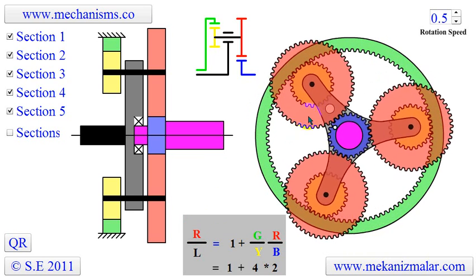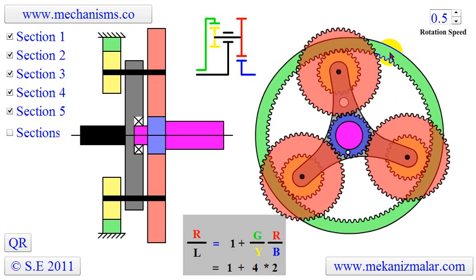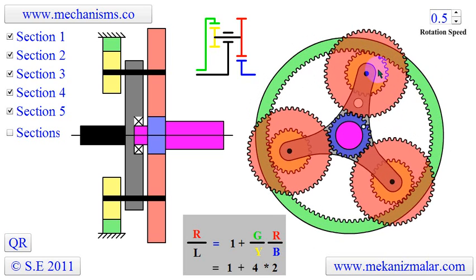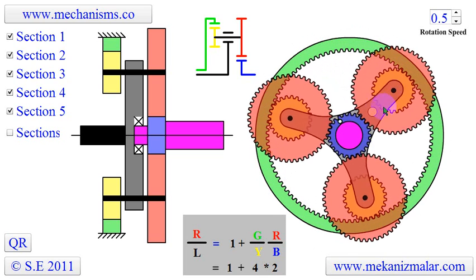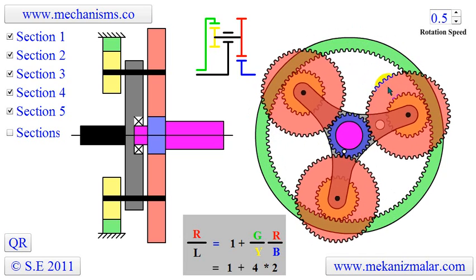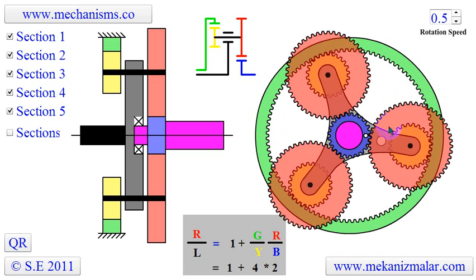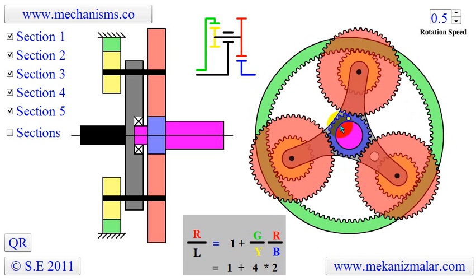The number of teeth on the green annulus gear is 96. On the yellow planetary gear, it is 24. On the planetary gears, it is 48. And on the blue sun gear, it is 24.